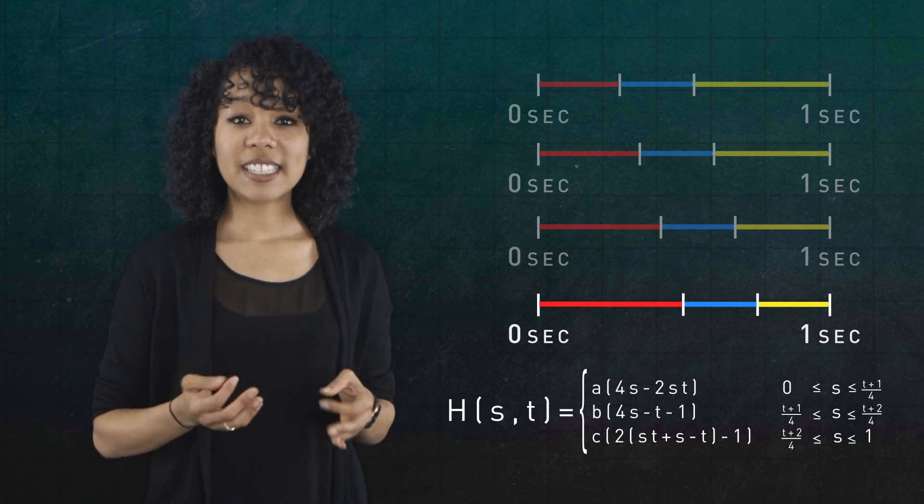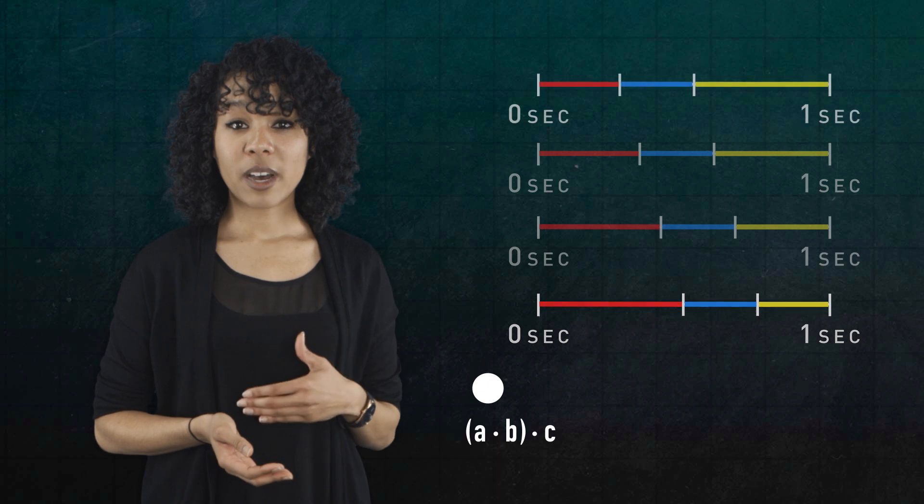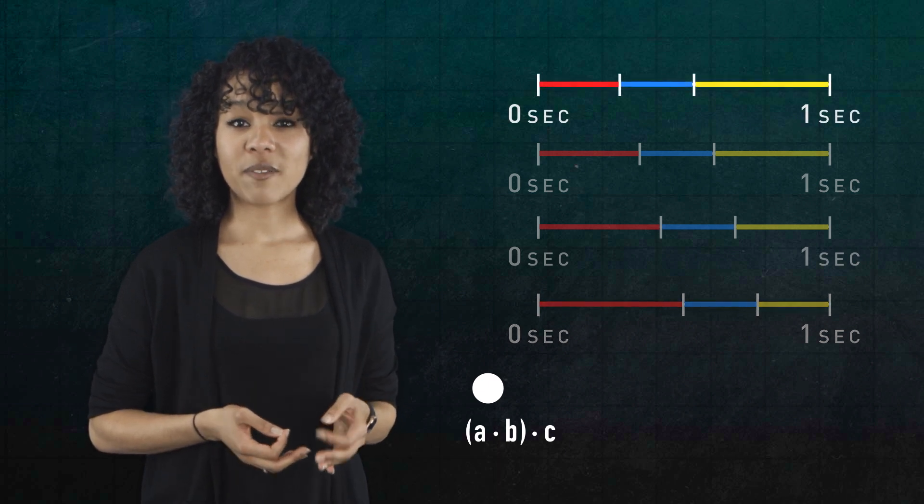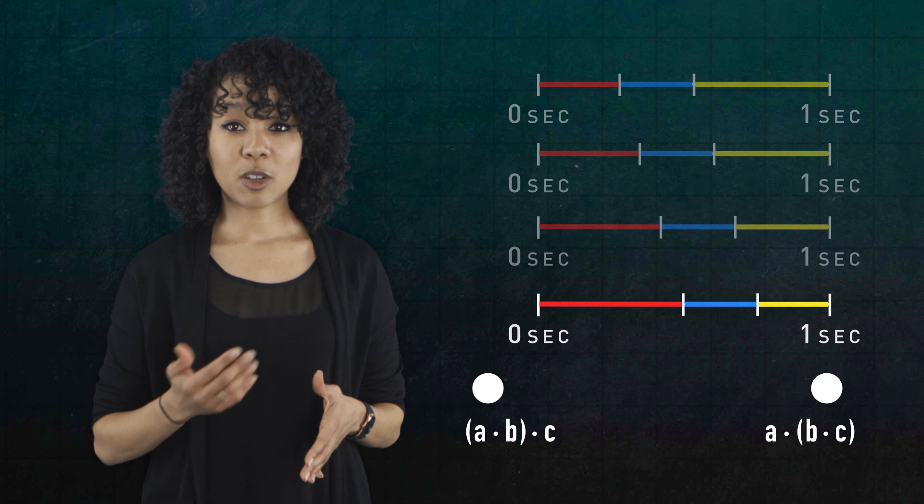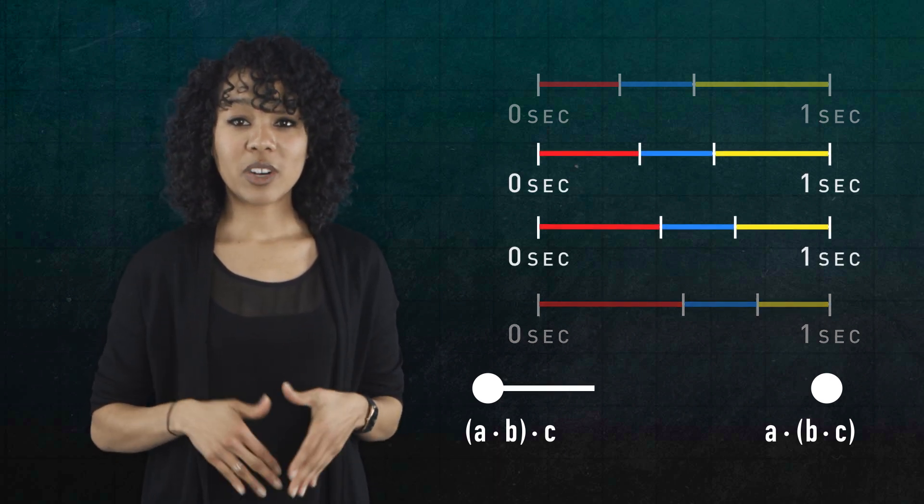In fact, we can think of a homotopy as giving us a path from one loop to the other. The left point corresponds to the loop where the red car travels in the first quarter second. The right point corresponds to the loop where the red car travels in the first half second. And every point in between corresponds to an intermediate option. So, let's recap.